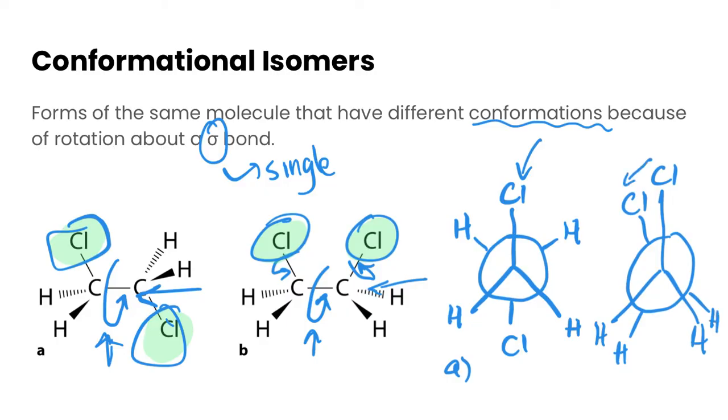Now these two chlorines are really close to each other in space, and so this particular conformation is not as energetically favorable. So it's likely this molecule is spending more time in the first conformation than the second. But like I said, all of these different conformations exist, and we can't isolate them because we can't stop a single bond from rotating around itself.